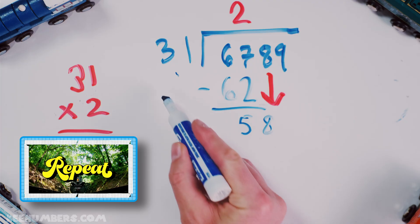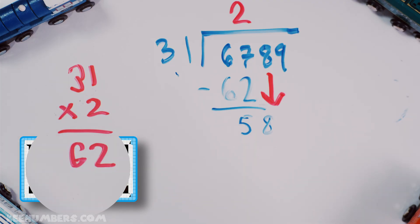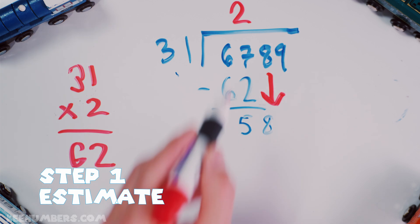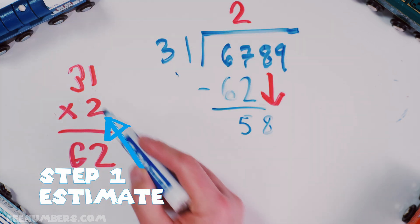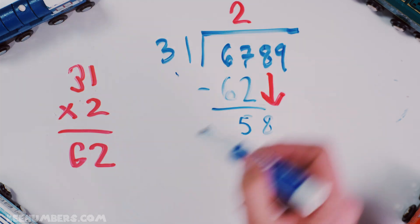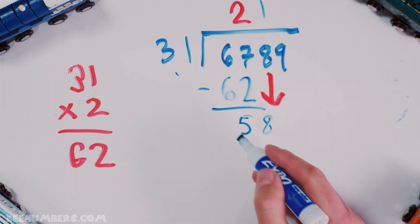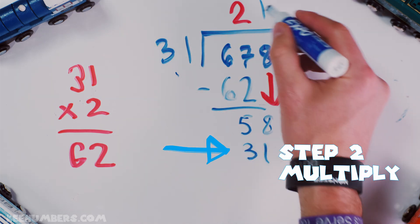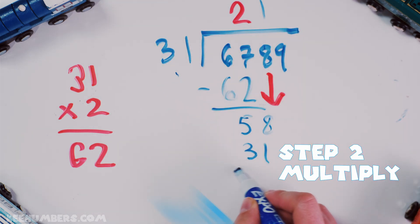We're gonna repeat here. How many times does 31 go into 58? Well, one time. We estimate. It's only one time because two 31's is 62. So you go to step 2. 1 31, that's just 31.